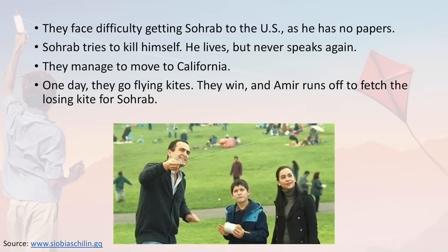They face difficulty getting Sohrab to the US as he has no papers, and Sohrab tries to kill himself. He survives but then refuses to ever speak again. They manage to move to California, and one day they go flying kites. When they win, Amir runs off to fetch the losing kite for Sohrab.